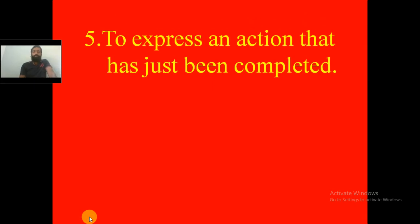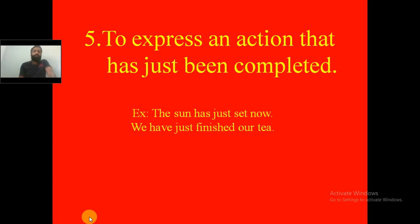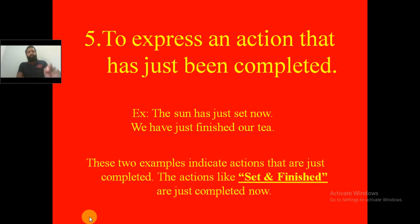The fifth usage of present perfect tense is to express an action that has just been completed. For example: 'The sun has just set now' and 'We have just finished our day.' These are actions that just been completed — not actions that happened a year back. The actions 'set' and 'finish' are just completed now, so we use the present perfect tense.